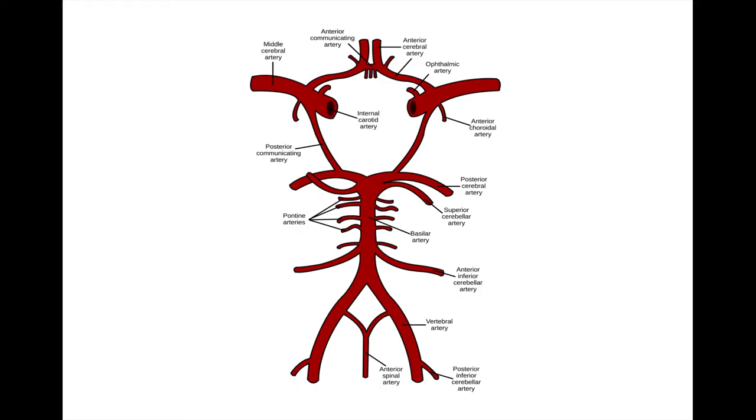Before we move on, however, there is an important point to note. Despite how it may appear, the vertebral arteries are not a continuation of blood flowing down from the basilar artery. Instead, they help bring blood up from the neck to the heart. In this way, the circle of Willis has two primary blood supplies: the internal carotid arteries in the front and the vertebral arteries in the back.